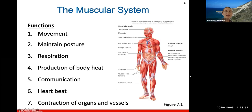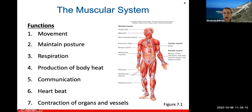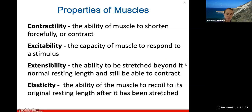The muscular system functions to help move parts of your body, maintain posture, breathe, produce body heat, and enable communication because the nervous system is directly in contact with your muscles. It regulates your heartbeat and the contraction of organs and vessels — constricting or dilating blood vessels. It also constricts and contracts the small intestines so that food moves through your digestive tract.